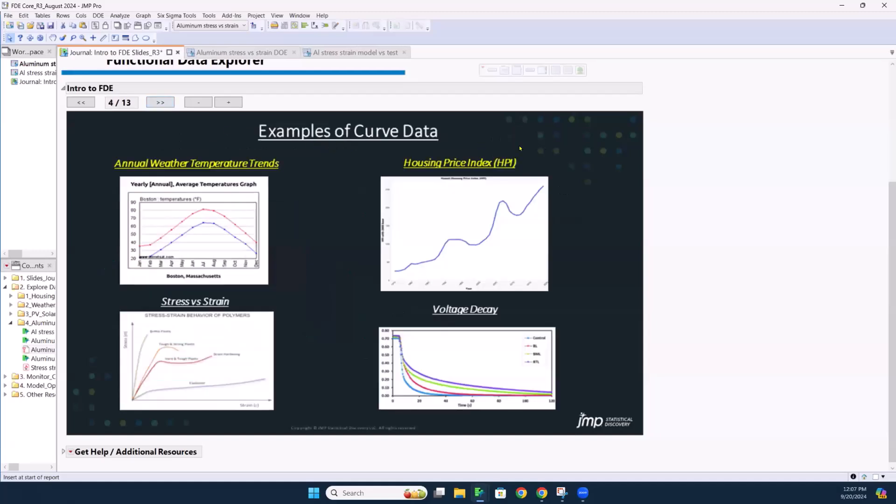Some examples, some stuff up top here probably you've seen in the news, annual weather trends, or if you're buying or selling a house, housing price index. And then down on the bottom here, some more kind of classic technical stuff, stress versus strain, which actually we are going to look at the first example here, and then we see a voltage decay, so a voltage level over time.